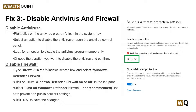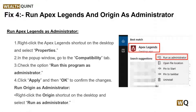Solution 4 is to run Apex Legends and Origin as administrator. Running the game and the Origin client with administrative privileges can help bypass certain permission-related issues that might be causing the anti-cheat error. To do this, follow these steps: first, run Apex Legends as administrator, and second, run Origin as administrator.